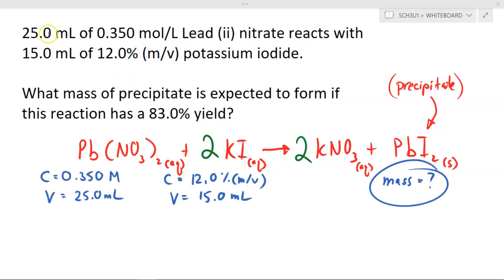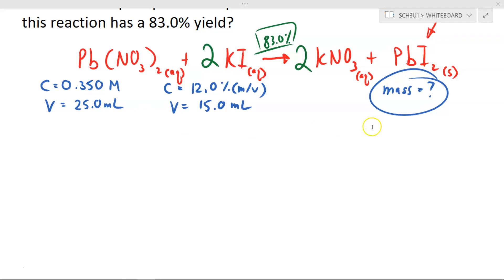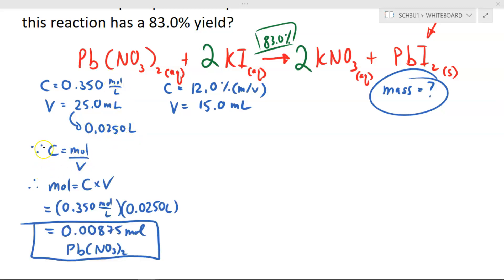Now I can transfer and organize the information from the question underneath my chemical reaction. When you have no clue what to do, convert to moles. Now you'll notice over here we are dealing with molar concentration, and molar concentration must always work with liters, not milliliters. So we divide this value by 1000, giving us 0.0250 liters of lead-two-nitrate. We can then convert to moles by rearranging this equation into mole is equal to C times V. Concentration 0.350 molar, volume 0.0250 liters, multiply them together and we get 0.00875 moles of lead-two-nitrate.